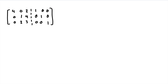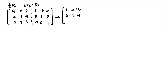We can start by simplifying the first row — we multiply it by 1/4. We also multiply the second row by negative 2 and add it to the third row. The first row becomes 1, 0, 1/2. The second row stays the same. For the third row: 1 times negative 2 is negative 2, plus 2 is 0; 4 times negative 2 is negative 8, plus 3 is negative 5.